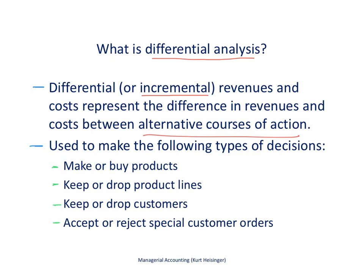It's often used to make several types of decisions. For example, we might want to decide whether to make a product internally or to buy it from the outside — that's often called outsourcing. Maybe we want to have somebody outsource the production of our products, or perhaps we would prefer to make them internally. We want to assess the costs that are differential to each of those alternatives.